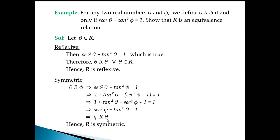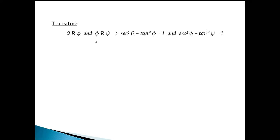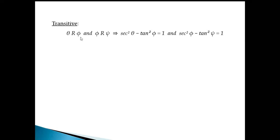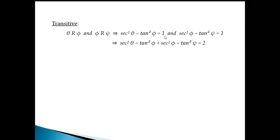For transitive, we take three angle elements θ, φ, and χ (chi/psi). We have θ related to φ meaning sec²θ minus tan²φ equals 1, and φ related to χ meaning sec²φ minus tan²ψ equals 1. Adding these two equations gives sec²θ minus tan²φ plus sec²φ minus tan²ψ equals 2.